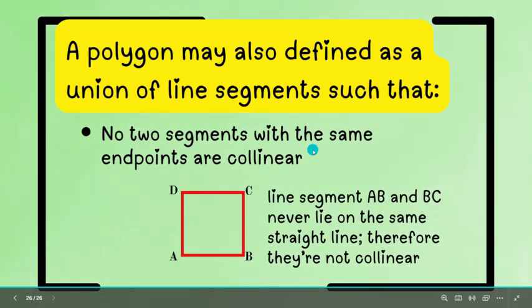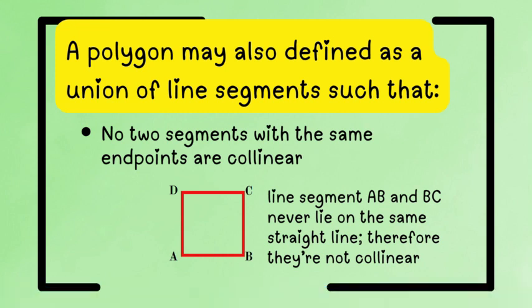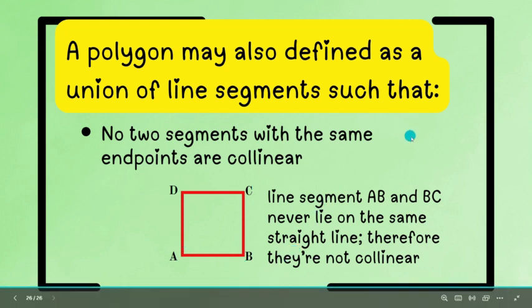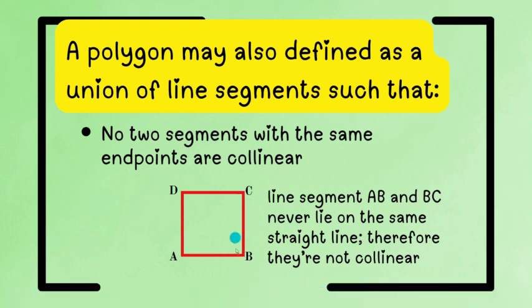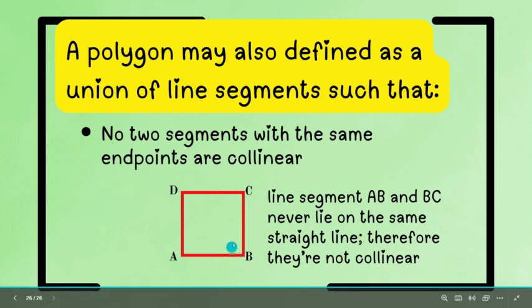Another definition that we can have for polygon is that no two segments with the same endpoints are collinear. So, ano ba ang ibig sabihin pag sinabi natin collinear? Pag sinabing collinear, ang ibig sabihin, ang dalawang points na yan ay sa iisang straight line lang. Meron tayong mga instances na collinear yung ating line kung meron tayong ABC na nasa iisang line lang. But, in this case, if this is a polygon, the two sides or edges should not be on the same straight line because they are not collinear.